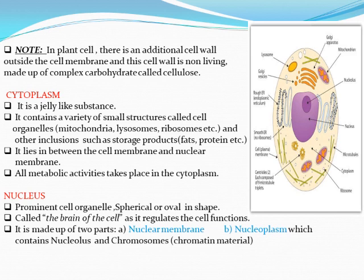The cell membrane is the outer layer in animal cells. But in plant cells, apart from the cell membrane, one more outer layer is present — the cell wall. So the cell wall is the outer layer, and the cell membrane is inside the cell wall. Cell wall is non-living, while the cell membrane is living.